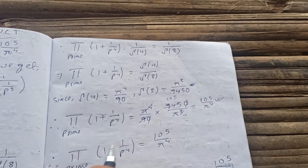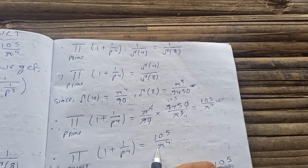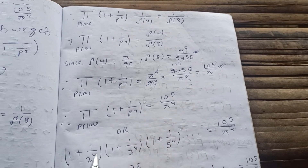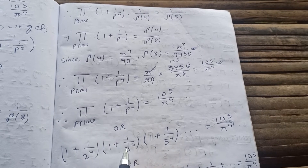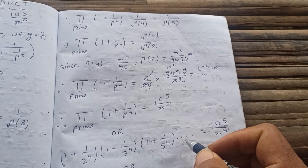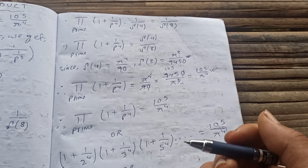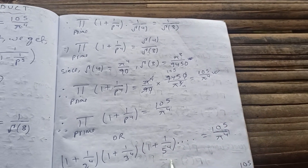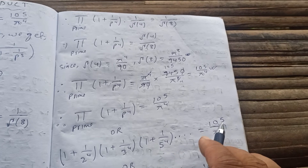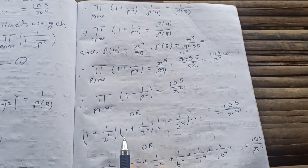Therefore, the product over all primes — (1 + 1/2⁴)(1 + 1/3⁴)(1 + 1/5⁴)(1 + 1/7⁴)(1 + 1/11⁴)(1 + 1/13⁴)(1 + 1/17⁴)(1 + 1/19⁴) and so on over all primes — equals 105/π⁴, which is what we required.